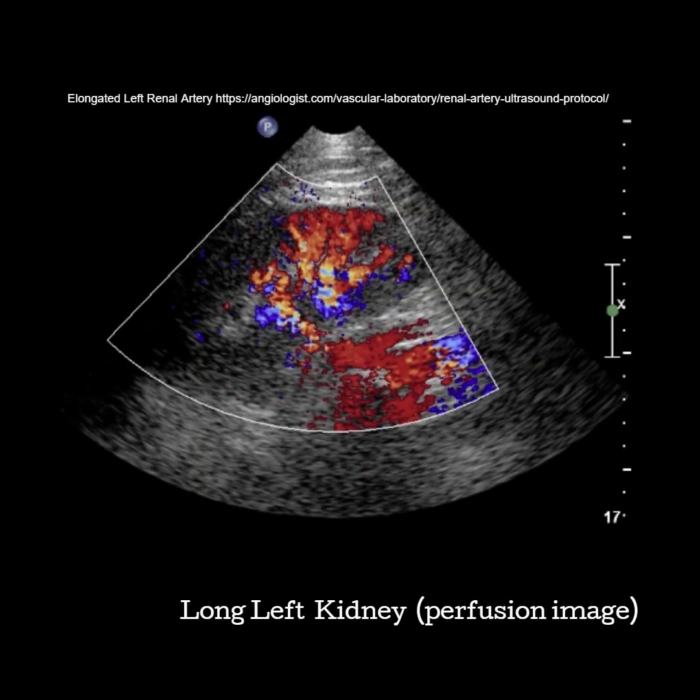Grab another color picture to show perfusion. Again, you'll be slightly oblique through the kidney as we want the hilum to show the renal artery and vein, but we want the mid portion so we can see more of the peripheral vasculature. Open your color box to cover the entire kidney. Try to keep your kidney horizontal as possible to make sure that the Doppler shift can be detected throughout the kidney. You can see in this image that the angle of the kidney is making it look like there isn't any blood flow to the superior pole.